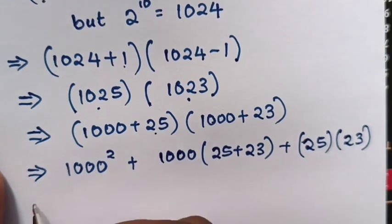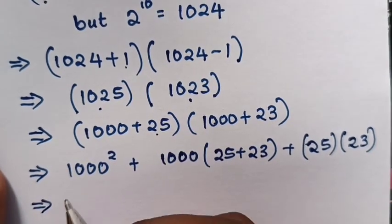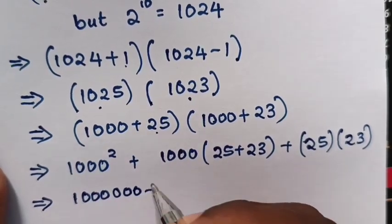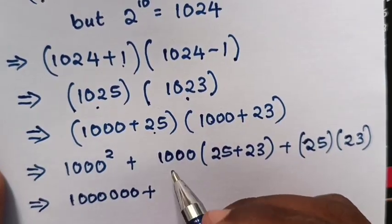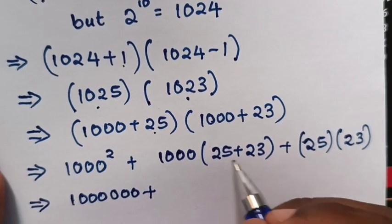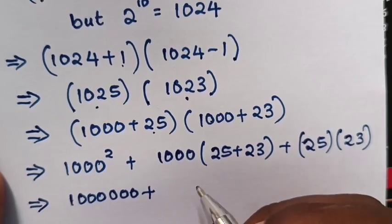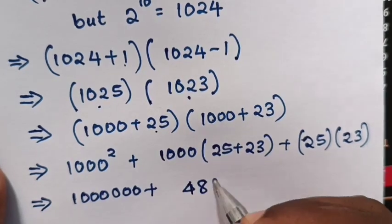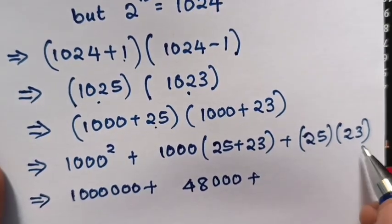Then 1000^2 is the same as 1 million, plus 1000 times (25 + 23) is 48, so it will be 48,000, plus 25 times 23.